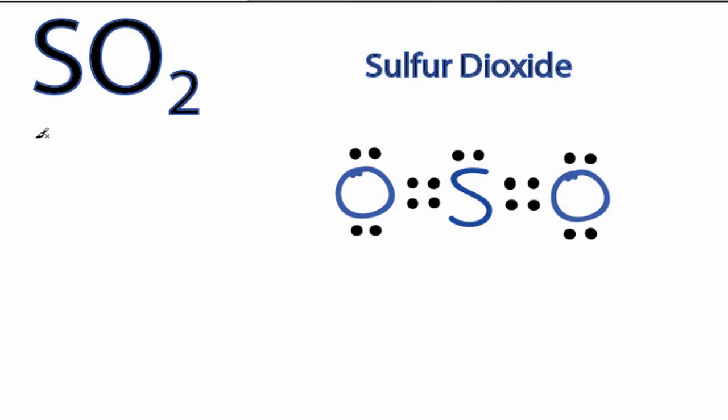We can find the molecular geometry for SO2 in two ways. First, we can use the Lewis structure for SO2 to visualize how the atoms and unbonded electron pairs will spread out in three dimensions.